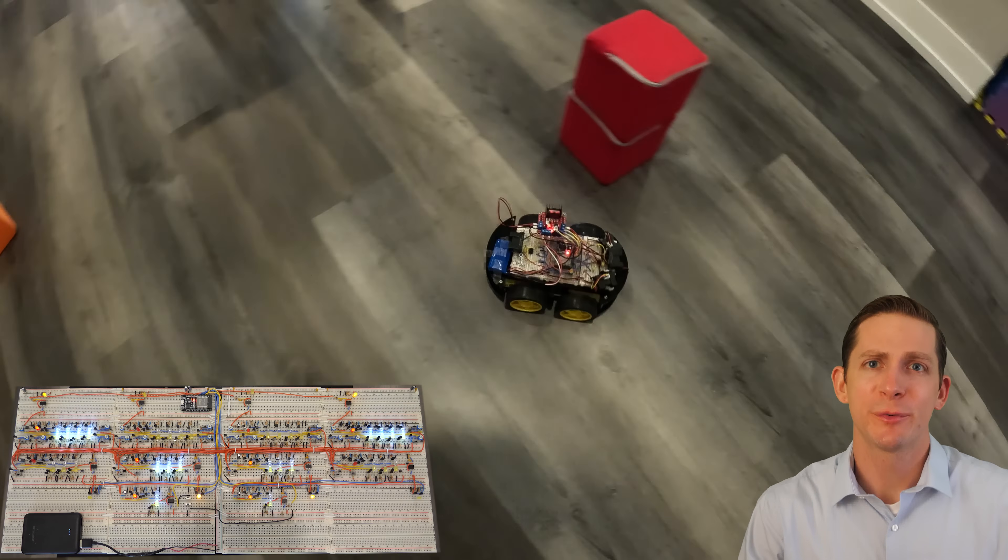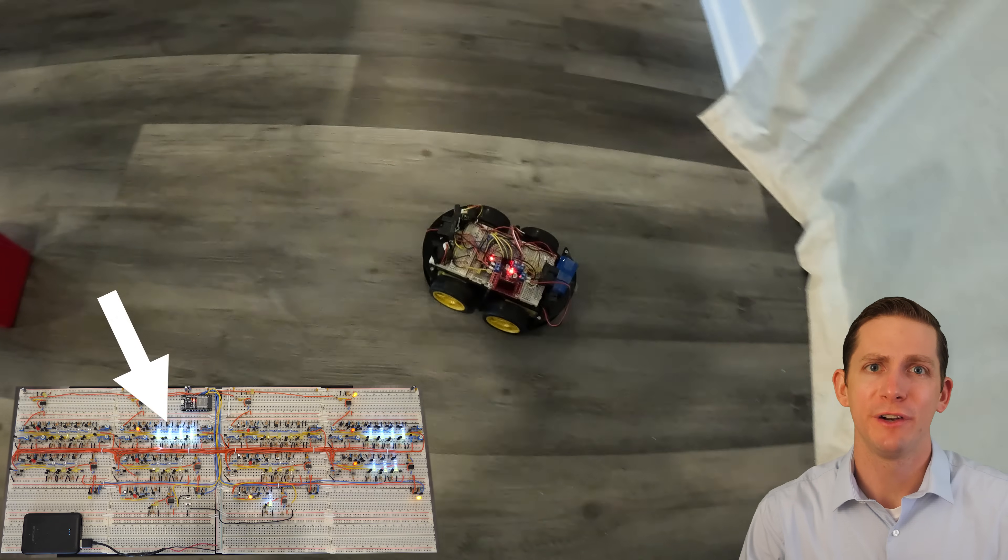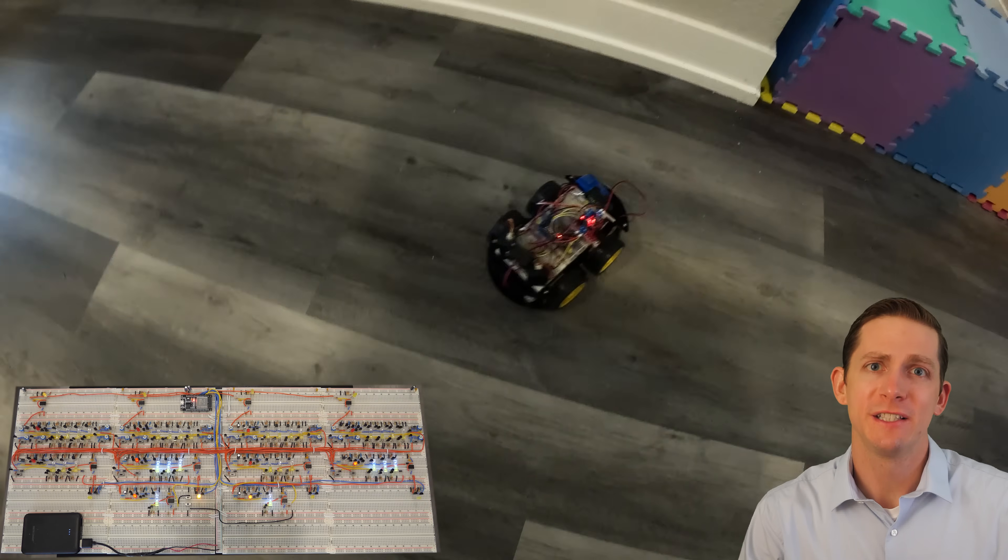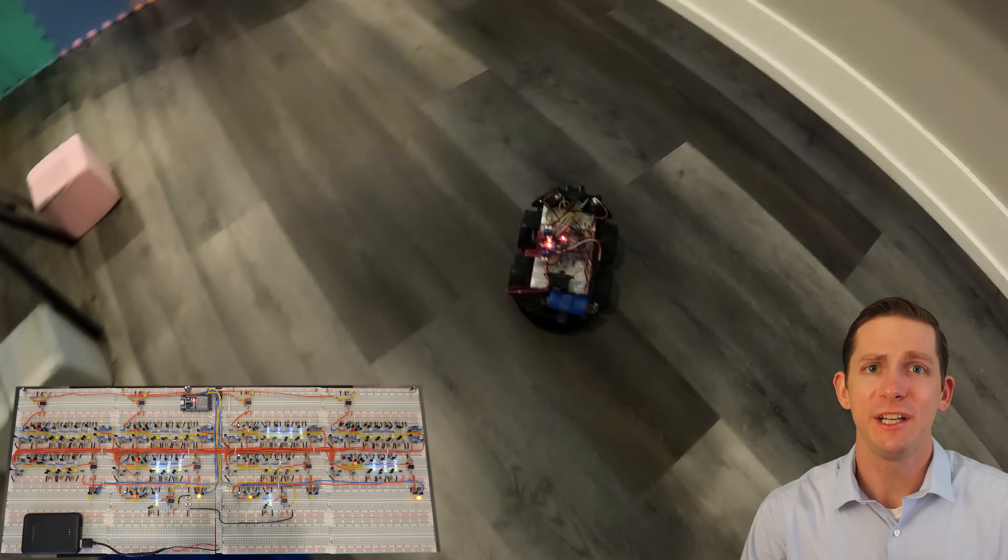As this robot car drives around, you can actually see the neural activity within the brain. This is because every time a neuron fires, an LED will turn on.